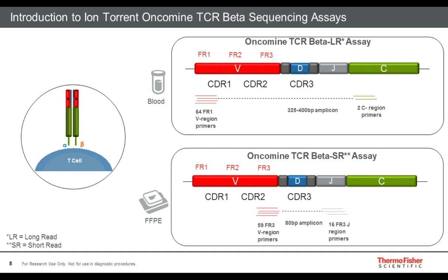This slide highlights the assay design of our TCR beta chain sequencing assays. We have developed an LR and SR assay. LR refers to long read with a long amplicon, and SR refers to short read with a short amplicon covering the CDR3. The CDR3-only short read assay, owing to its short amplicon length, is compatible with FFPE-preserved material where nucleic acids may be degraded. By contrast, the LR assay utilizes multiplex primers targeting the framework 1 region of the variable gene and the constant gene region, producing an amplicon of approximately 330 base pairs that includes sequencing coverage of all three CDR domains — not just CDR3 for tracking cells and measuring clonal diversity, but also the germline encoded CDR1 and CDR2 regions of the receptor.